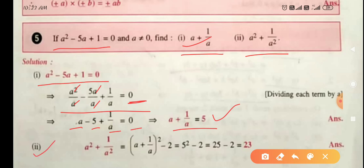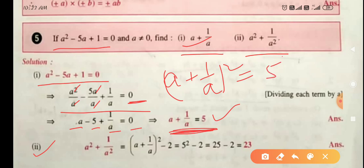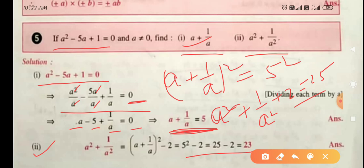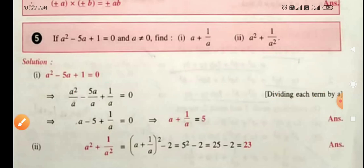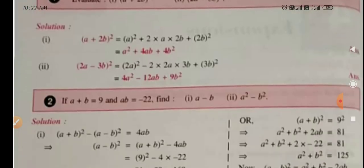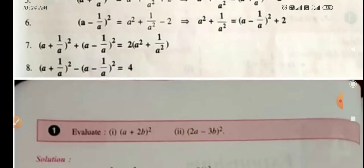For the second part, a² + 1/a²: since a + 1/a = 5, square both sides — (a + 1/a)² = 25. Expanding: a² + 1/a² + 2 = 25, so a² + 1/a² = 23. These were the examples based on the identities explained in this video. Please learn these identities to solve Exercise 4A questions. In the next video, I will explain Exercise 4B. Thank you, have a nice day.